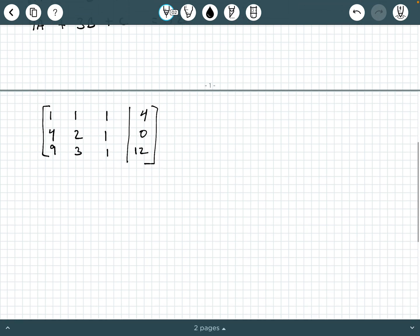So from here, we're going to perform elementary row operations. So I'm going to say -4 row 1 plus row 2 to change row 2. And then I'm going to say -9 row 1 plus row 3 to change row 3. And again, we're just using row 1. So row 1 is going to stay the same.